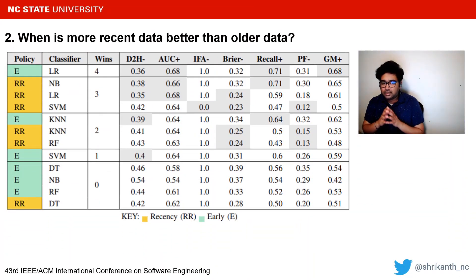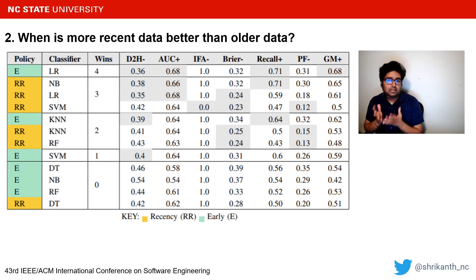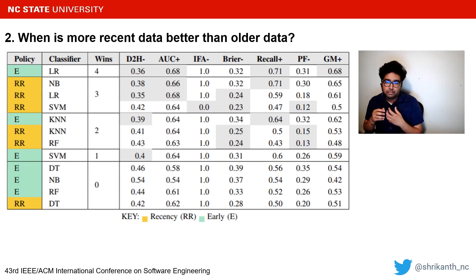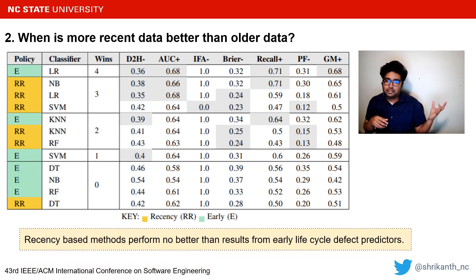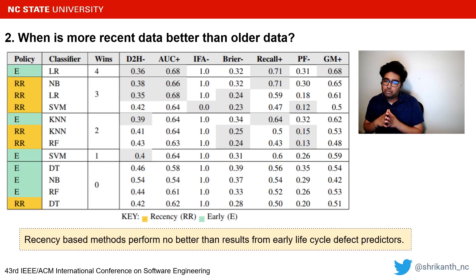When is more recent data better than older data? This table shows results of 12 defect prediction models tested across all project releases. If recent data is comparatively more informative than older data, then defect predictors built on recent data (RR) should outperform predictors built on much older data (E). However, we see that E and RR perform almost the same. We conclude that recency-based methods perform no better than results from early lifecycle predictors.